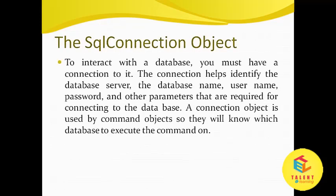First is the SQL connection object. To interact with the database you must have a connection to it. The connection helps identify the database server, the database name, user name, password, and other parameters that are required for connection to the database. A connection object is used by a command object so they will know which database to execute the command on.